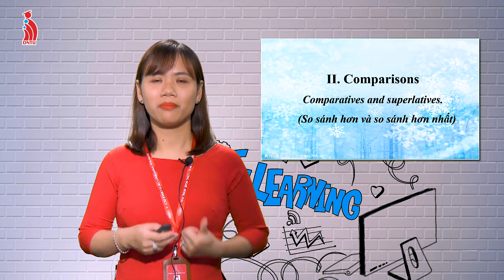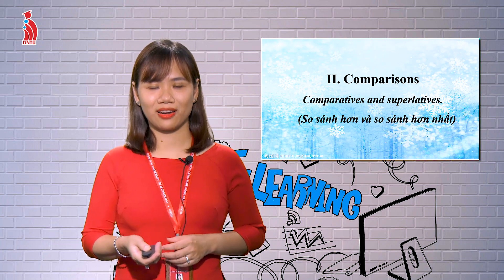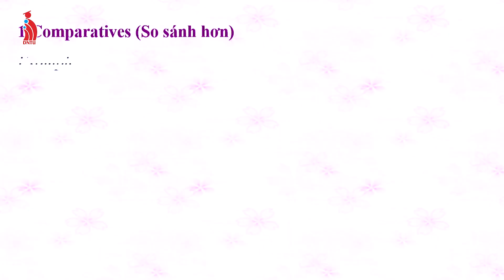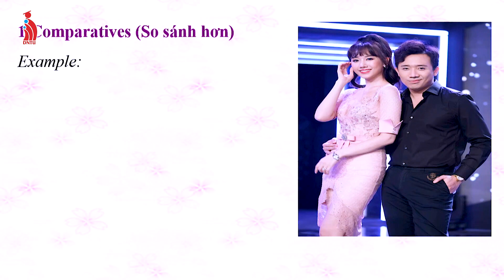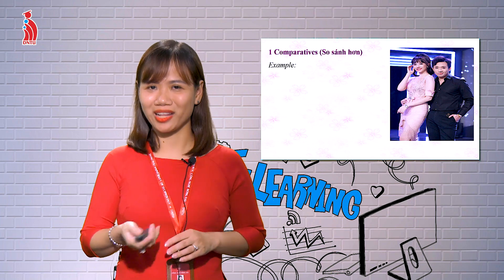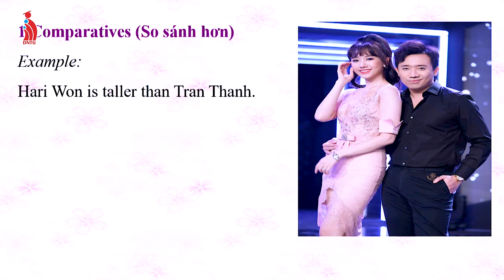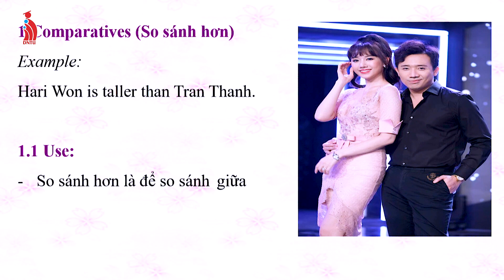Now let's talk about comparative and superlative. Let's start with comparative. Look at the example — it's Hari and Trấn Thành, right? So here's a sentence: 'Hari Won is taller than Trấn Thành.' We use the comparative form to compare two people, two things, or two objects.